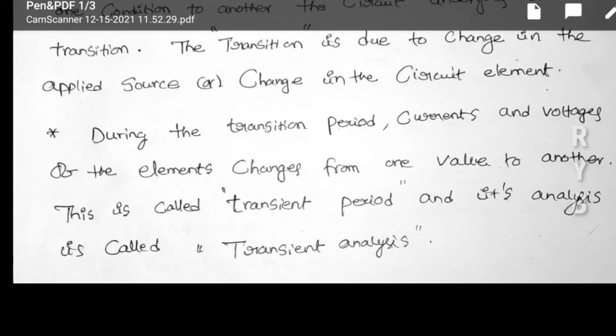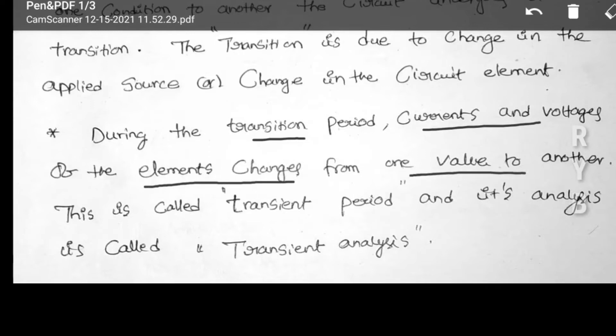What is meant by transient period? From one state to another state, if it changes, that is the transient period. The currents and voltages of the elements change from one value to another value — current i and voltage v both change. That is called the transient period, and its analysis is called transient analysis.